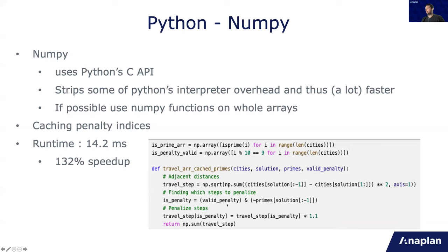Again, as before, the valid penalty and primes are indexed from the solution. Solution is the order of the cities, which are basically the order of how the salesperson travels between the cities. And if it's valid penalty and not a prime, you need to create penalty. And then for every cell which has penalty, which is boolean true, you add the penalty. So you multiply the travel by 1.1, which is basically another 10%. And then you sum using only NumPy operators.